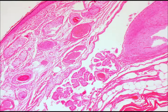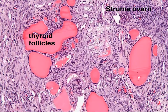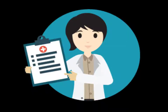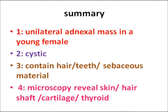In other views you can appreciate keratin, cartilage, smooth muscle cells, and blood vessels. Another microscopic view shows skin with adnexal tissue. Thyroid follicles may be present independently or as a component of the cyst wall. Microscopically, the wall is composed of stratified squamous epithelium with underlying sebaceous glands, hair shafts, cartilage, muscle, adipose tissue, and thyroid tissue.